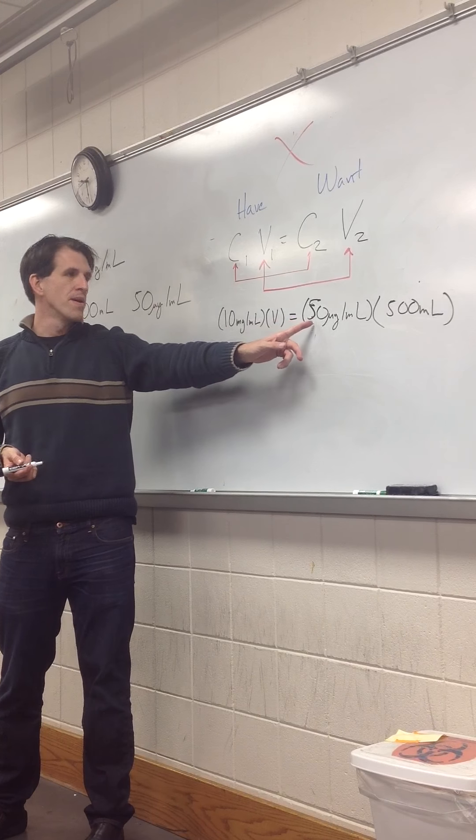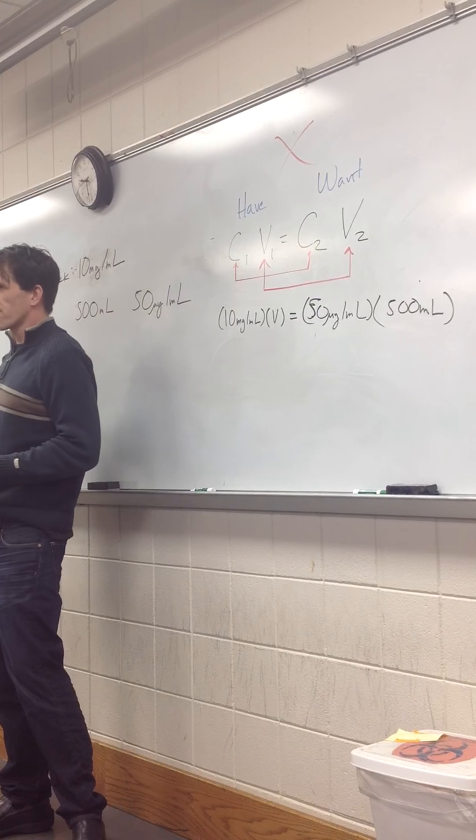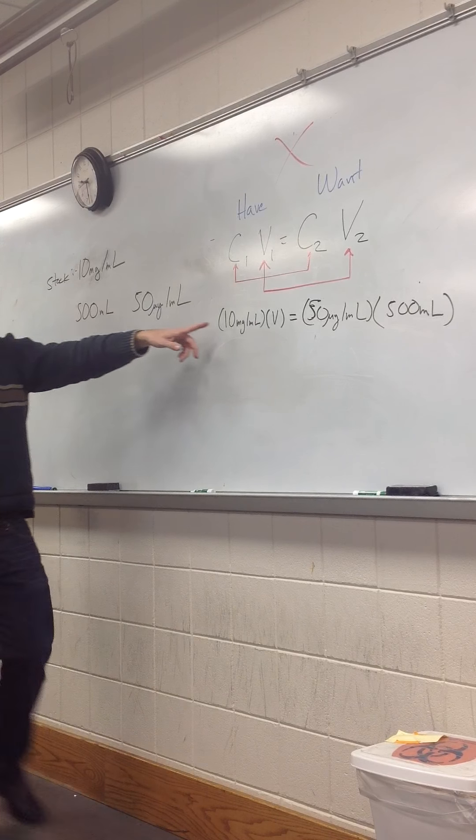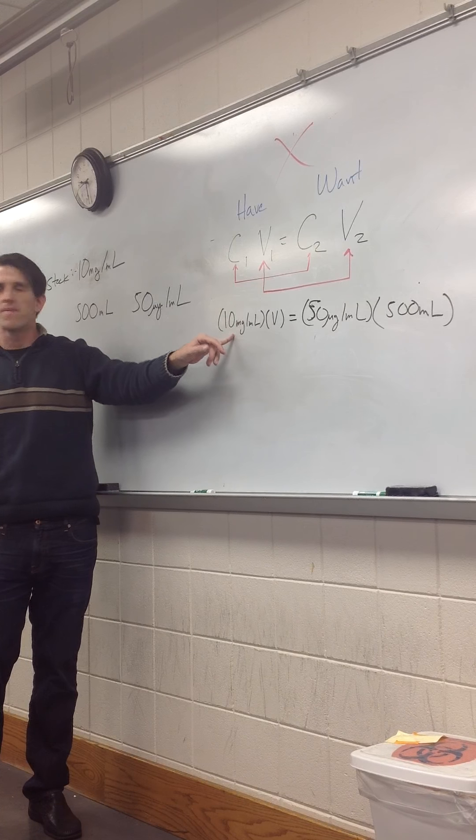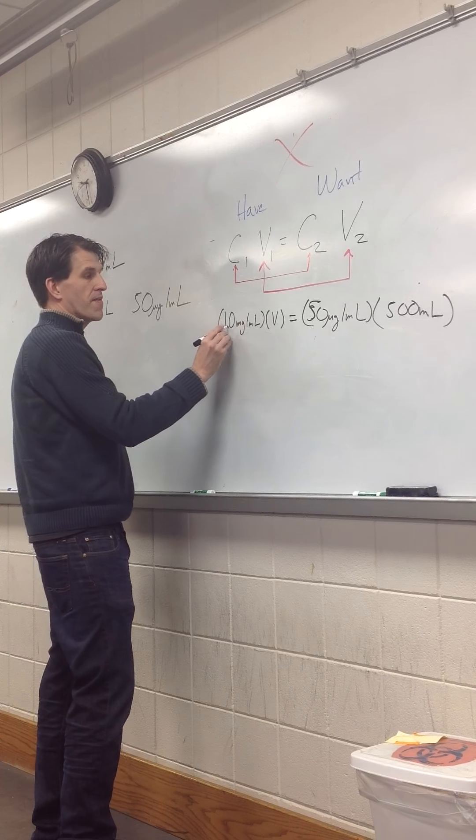Now, technically, you can make this into milligrams, but then you've got a decimal, and those are going to get confusing. Trust me. Okay. So, how many milligrams per milliliter is this? Excuse me. Micrograms per milliliter is this? 10 milligrams.